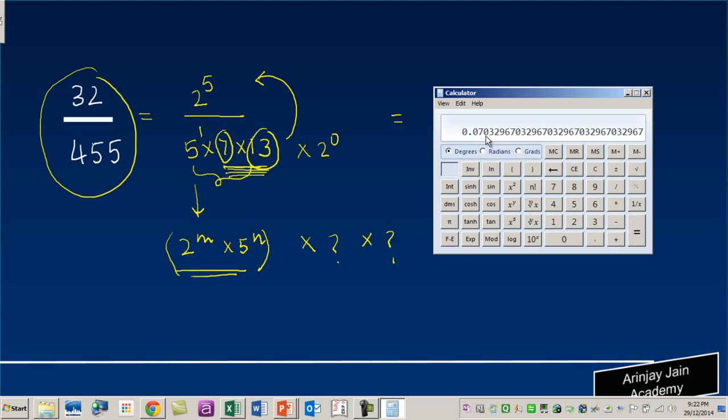Now if you see the answer we are getting is a non-terminating decimal expansion. What is repeating itself? 7-0-3-2-9-6, 7-0-3-2-9-6, 7-0-3-2-9-6. It has closed here because that's the number of digits in this calculator, but effectively this is a non-terminating decimal expansion.